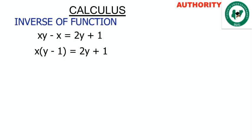Now we factor out x from xy minus x. Factoring out x, what remains is y from xy, and 1 from x, giving us x times (y minus 1). Because x times y gives xy, and x times 1 gives x — so this expression x(y minus 1) is the same as the above, and it equals 2y plus 1.